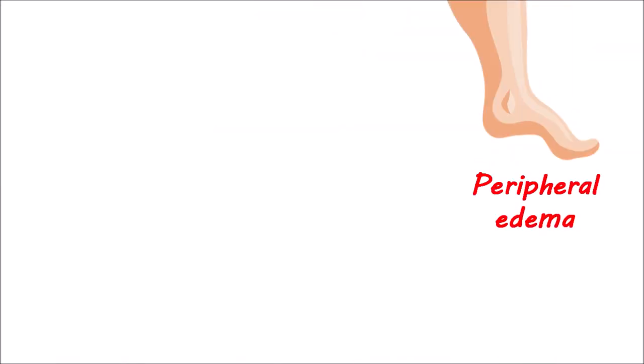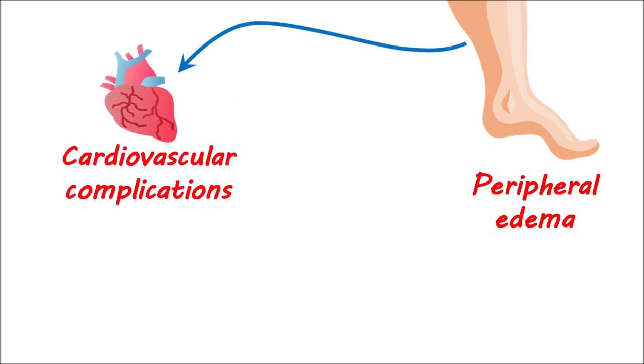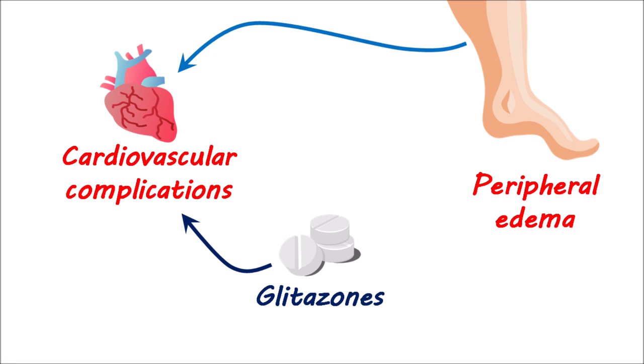This drug can also cause peripheral edema, which is more troublesome in patients with cardiovascular complications. This is especially important when this drug is combined with other drugs that also induce peripheral edema. A few of the antidiabetic agents, such as glitazones, can produce peripheral edema. Since glitazones can increase fluid retention and may impair cardiac functionality, care should be taken when pregabalin is combined with these drugs.